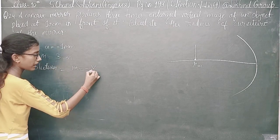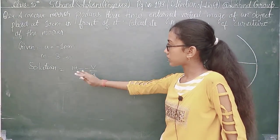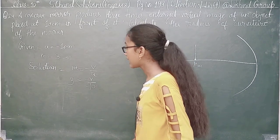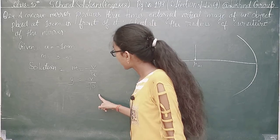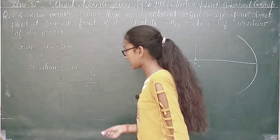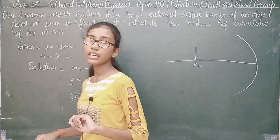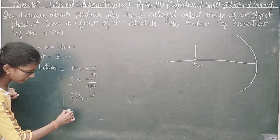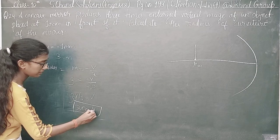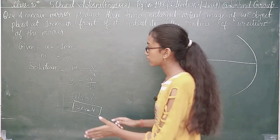The formula for magnification is m equals minus v by u. So m equals 3, equals minus v by u. The u value is minus 10, so we write minus v divided by minus 10. This gives us 3 times 10 equals v, so v equals 30 cm.